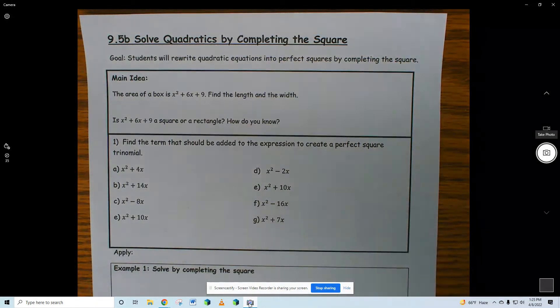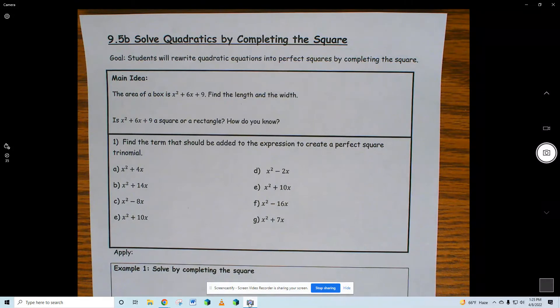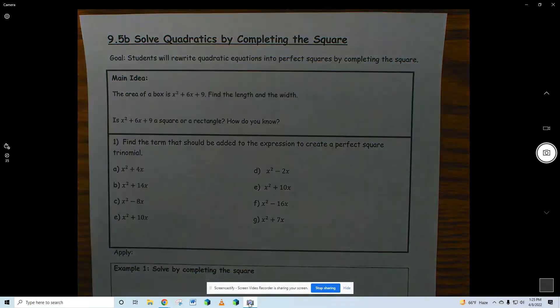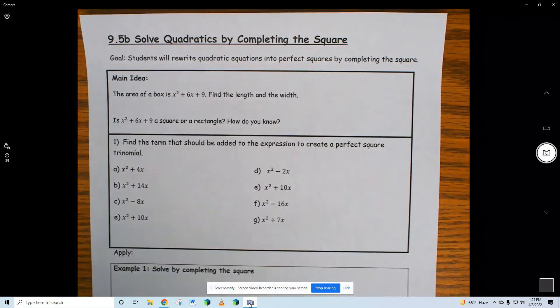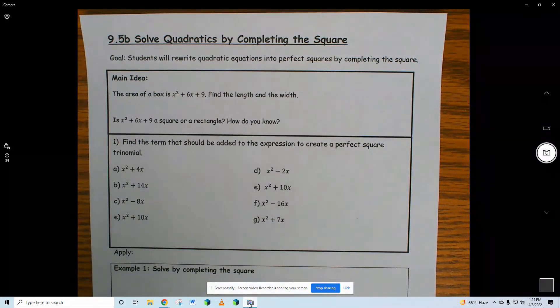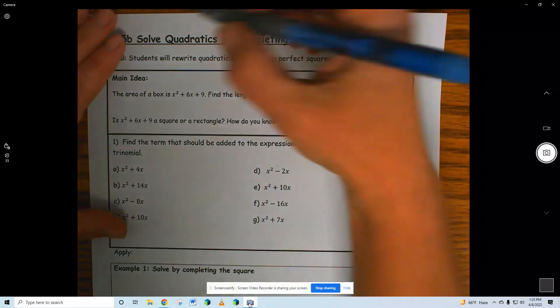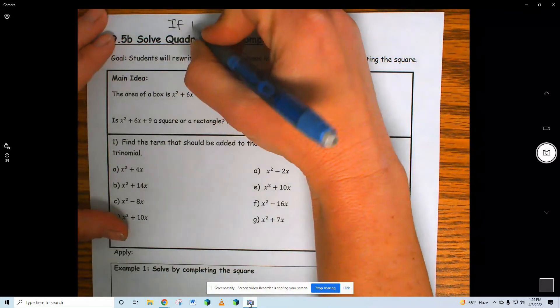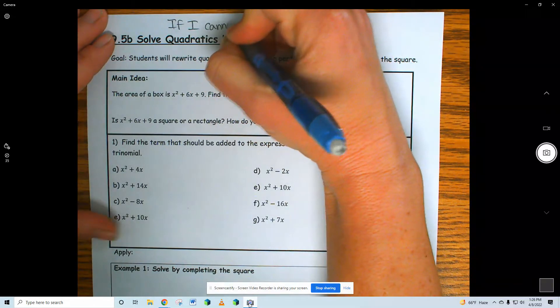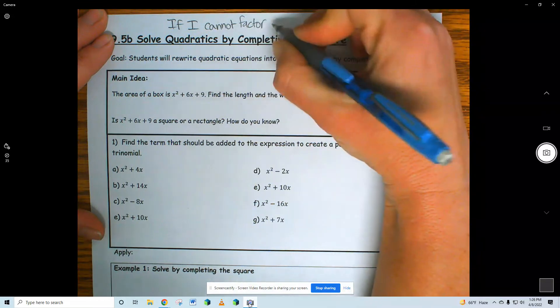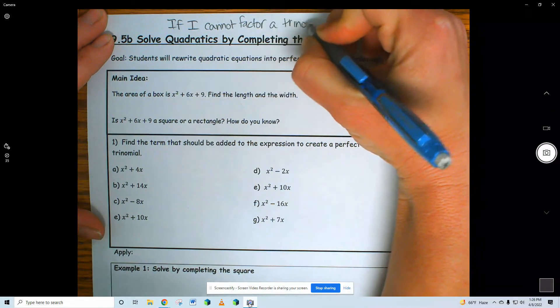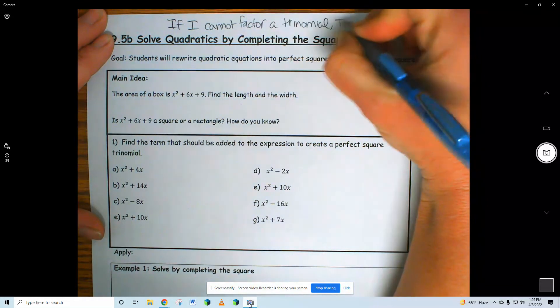Hi. This is a new concept we learned today, it's called completing the square. The only reason that I would ever complete the square is if I couldn't factor something. So I look at a trinomial and I can't figure out what the parentheses are and I come to the conclusion that it's not factorable. So if I cannot factor a trinomial, I complete the square.